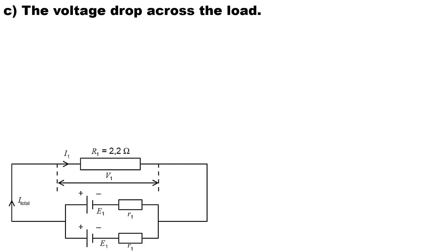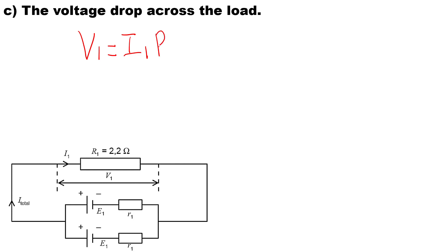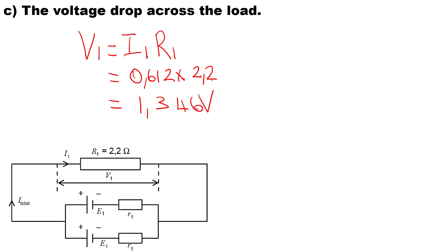Next, we calculate the volt drop across the load resistor. We measure the potential difference across the load resistor using a voltmeter in a closed circuit. We call it V1, and since there is only one resistor, V1 equals I1 times R1: 0.612 times 2.2 ohms. The volt drop across the load resistor is also 1.346 volts, which is the same as across the battery.